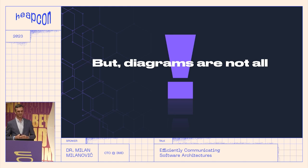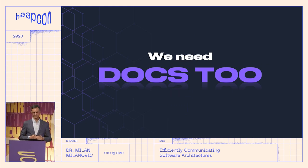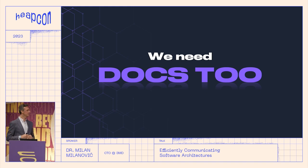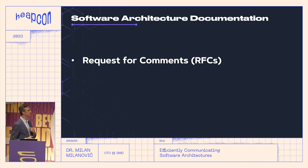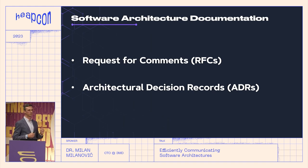But diagrams are not all — we need something more. You cannot read everything from diagrams; we need documentation too. And when I say this, we need to have what I call a high documentation culture. Even though it is not so well accepted, I think it is very, very important. When we talk about software architecture documentation, we think mostly around two things: requests for comments, and architectural decision records.